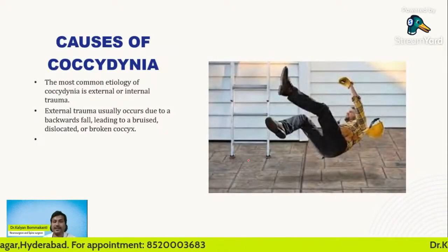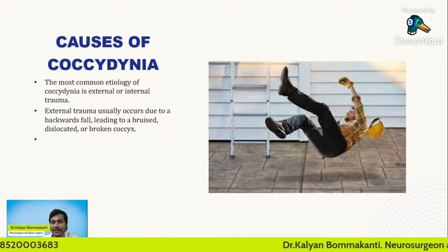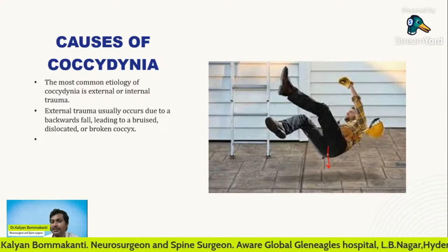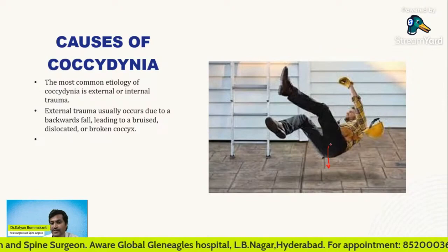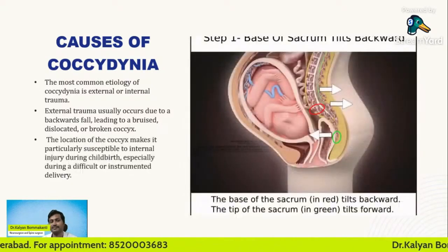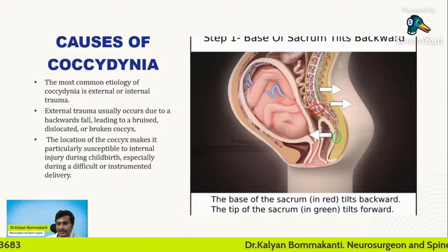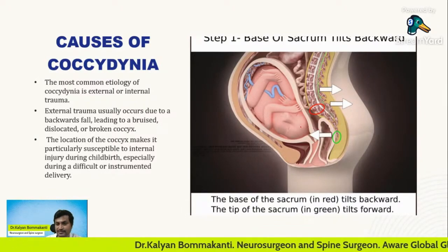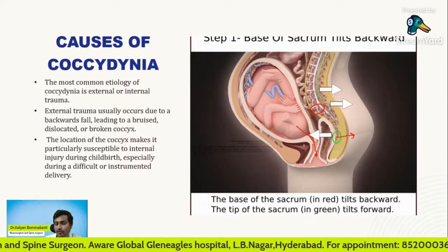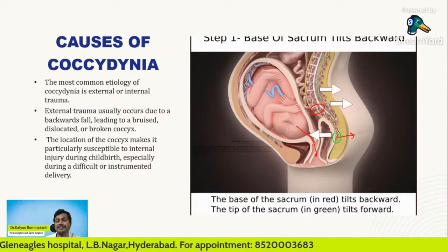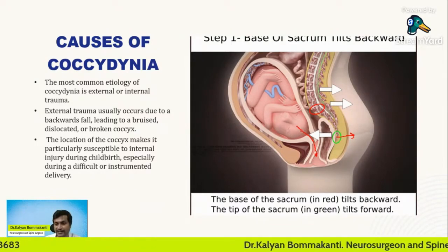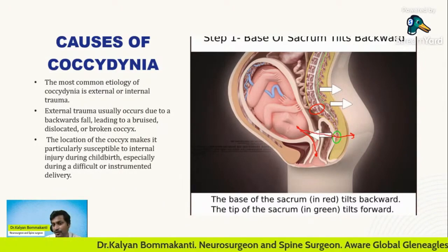The cause of coccydynia is most commonly trauma — it can be internal or external trauma. External trauma: the person falls on his buttocks; the tailbone is situated between the buttocks, and when the patient falls this way it leads to a dislocated or broken coccyx. Internal trauma occurs during childbirth — normally when the child descends, the coccyx slightly moves backward to open the passage. However, if the coccyx is not mobile, or due to any abnormality such as a very large fetal head, or if delivery is not conducted properly, the child can injure the coccyx.